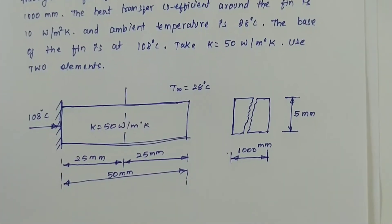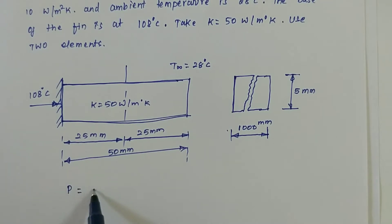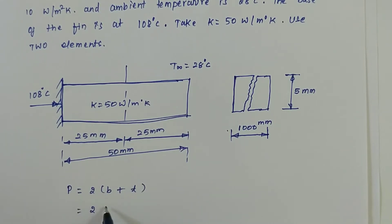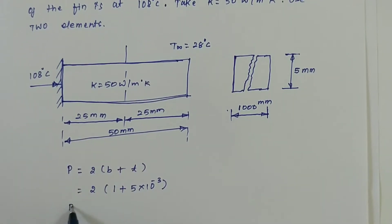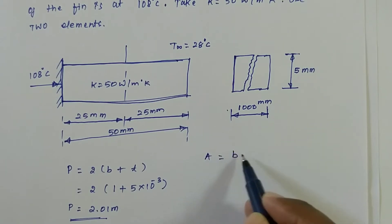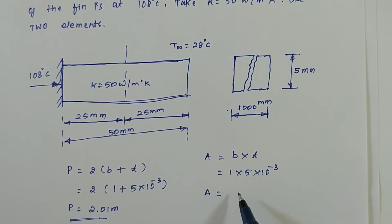This is the given diagram. First we need to find out the perimeter and area. Perimeter is equal to 2 times (B plus T). Converting everything into meters: B is 1000 mm, which is 1 meter; thickness is 5 mm, which is 5 into 10 power minus 3. So the perimeter is 2.01 meter. Area is equal to B into T, which is 1 into 5 into 10 power minus 3, so area is 5 into 10 power minus 3 meter square.